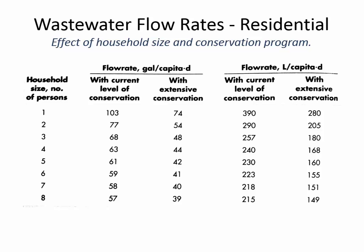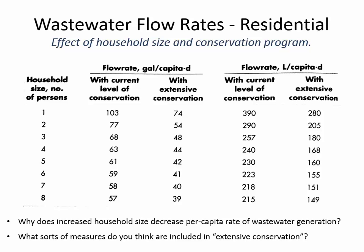Indoor water use isn't exactly correlated with wastewater generation. Looking at this table, each row is a different number of people in a household. What trend do we see with increasing household size on the amount of wastewater generated per person? Per person it decreases. So why is that? How can we explain why having eight people in a house means they're using less water per person than if it was just two?